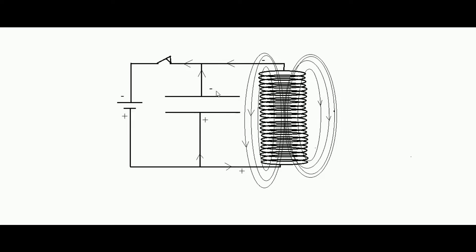When key K is opened, the battery is disconnected from the capacitor and inductor. Now the capacitor is in direct interaction with the inductor. Remember: a discharging capacitor does not change its polarity compared to the polarity it had while charging.